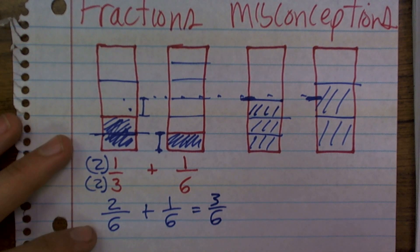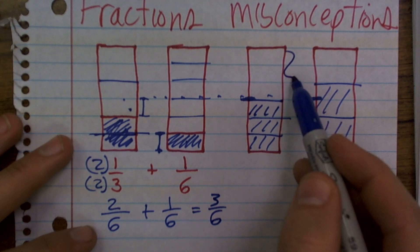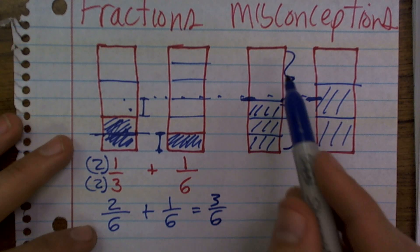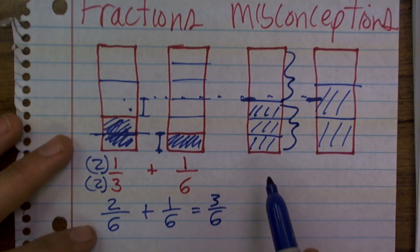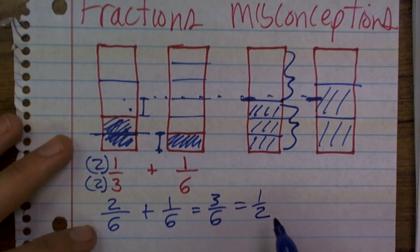And the other thing, when we're talking about equivalent fractions, just to let you know, if you guys will notice, that these two are equal to each other. So we have one-half and one-half. So three-sixths equals one-half.